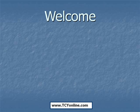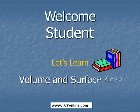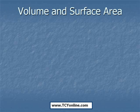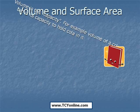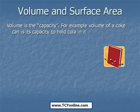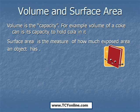Welcome, student. Today we will learn about volume and surface area of some three-dimensional figures. Let's first look at the meaning of volume and surface area. Volume means the capacity — for example, the volume of a coke can is its capacity to hold cola in it. Surface area means the measure of how much area is exposed by the figure.